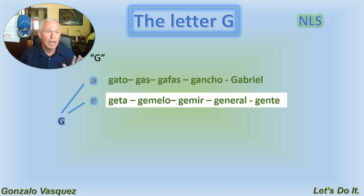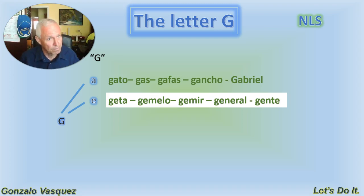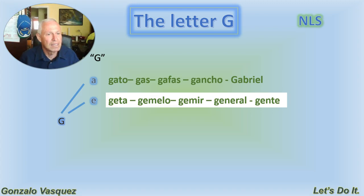Geta. Spanish is a very specific language — 'geta' describes the mouth of an animal, like a dog. You're not going to say 'la boca del perro' — la boca is for persons. For animals: la geta del perro, la geta del burro, la geta de la vaca.